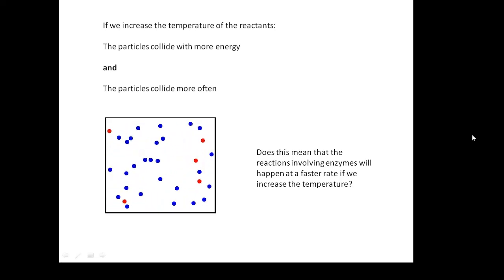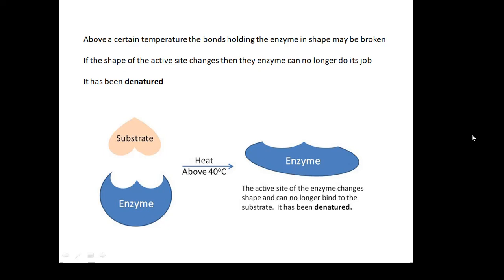Does this mean that the reactions involving enzymes will happen at a faster rate if we increase the temperature? Well, if we increase the temperature, then a chemical reaction will be more likely to happen. It's a little bit more complicated, though, because above a certain temperature, then what happens is that the bonds holding the enzyme in shape might be broken. I did mention that some of the bonds aren't particularly strong. And if the shape of the active site changes, then the enzyme can't do its job. We say that the enzyme has been denatured. Don't say it's been killed because it's not alive. It has been denatured.